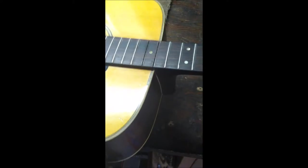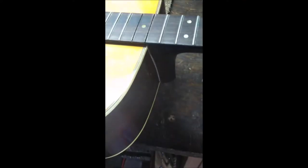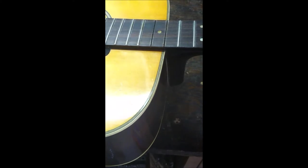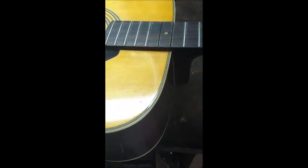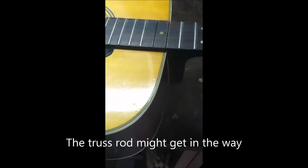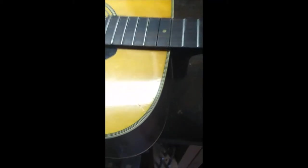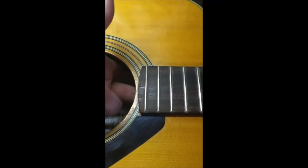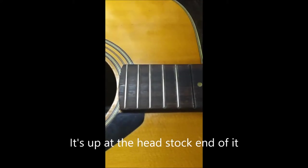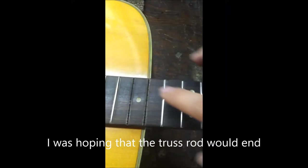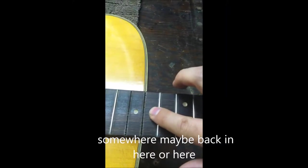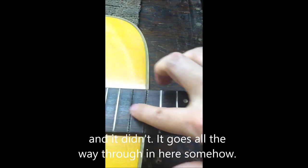So I've got the neck heel released from the body, but what I was afraid of was the truss rod might get away because there's no access under here for the truss rod headstock end of it. I was hoping that the truss rod would end somewhere maybe back in here, and it didn't—it goes all the way through in here somehow.